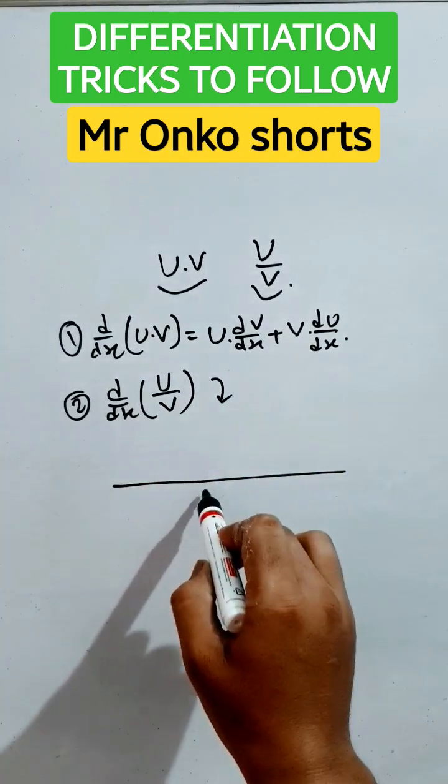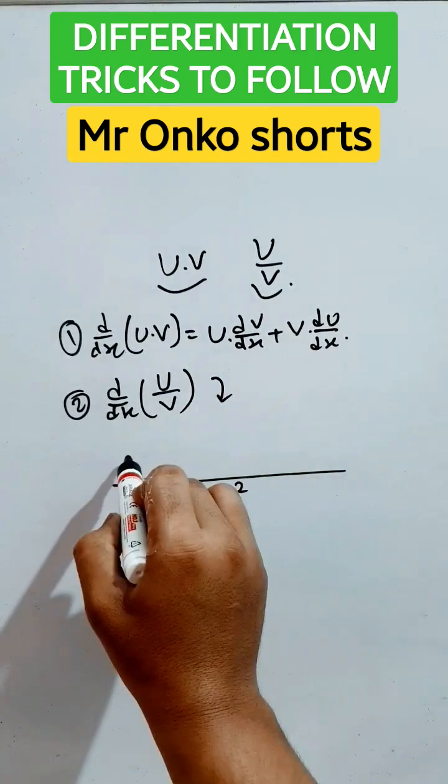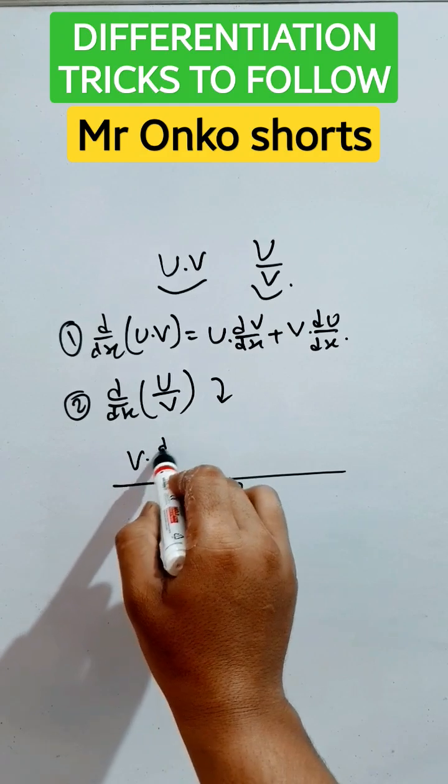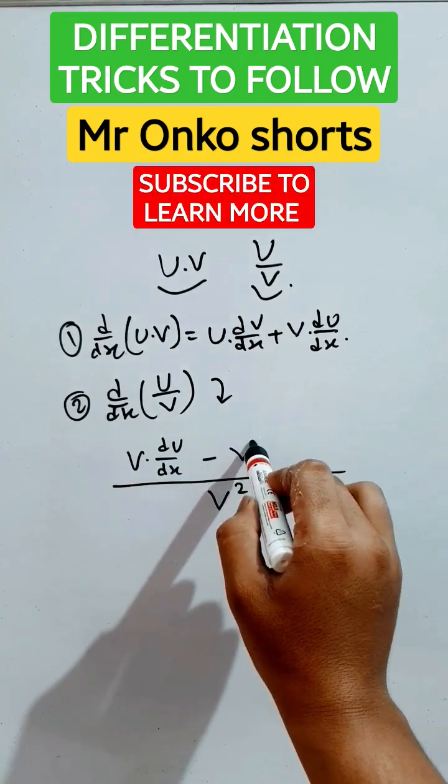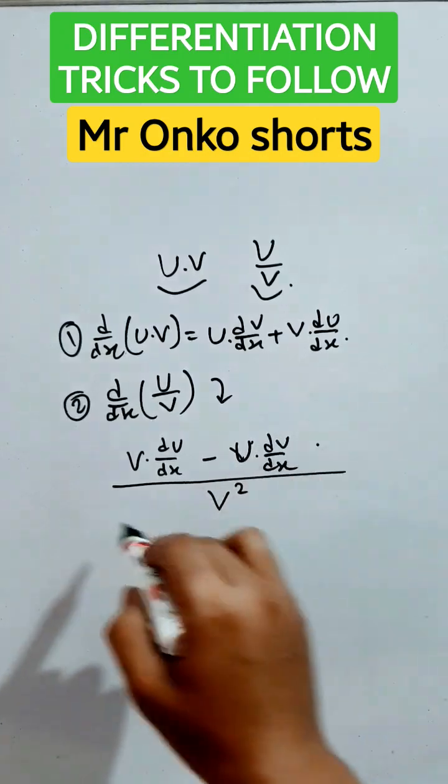That will be take the denominator form with its square in the denominator. Now fix the denominator part and take derivative of the numerator, then minus of fix the numerator part and take derivative of the denominator. Thus you can solve it quickly.